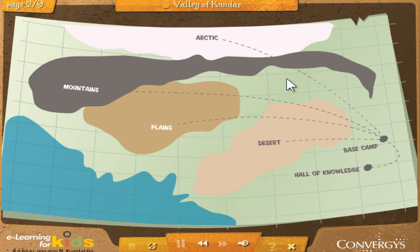Welcome to the map of your quest. Your goal is to discover the fossils in the Valley of Kundar. This valley holds the climates of the desert, the Arctic, the plains, and the mountains. Before you begin digging up your finds, you must learn about fossils in the Hall of Knowledge and then learn about your gear and base camp. Each area will open to you as you complete your tasks. Let's go!